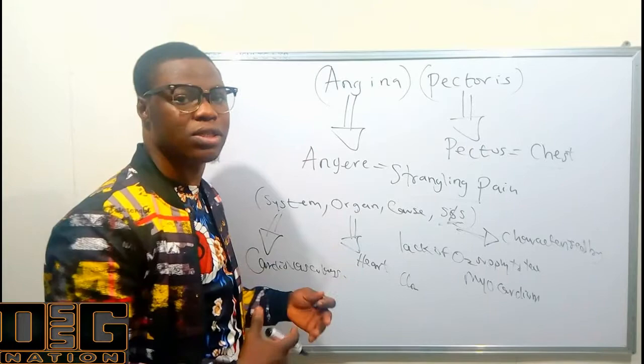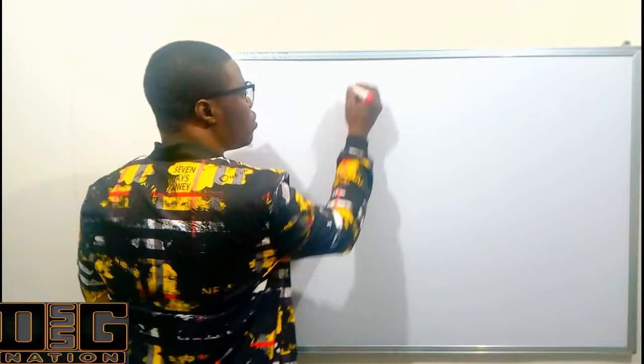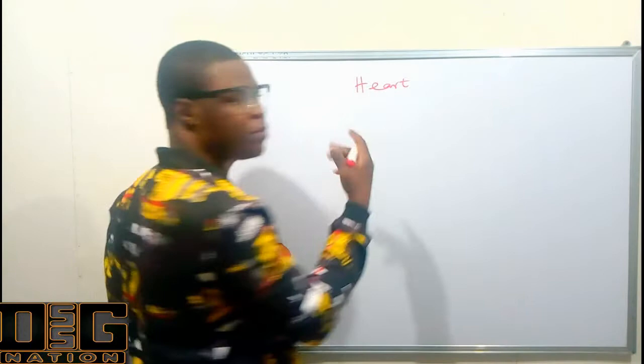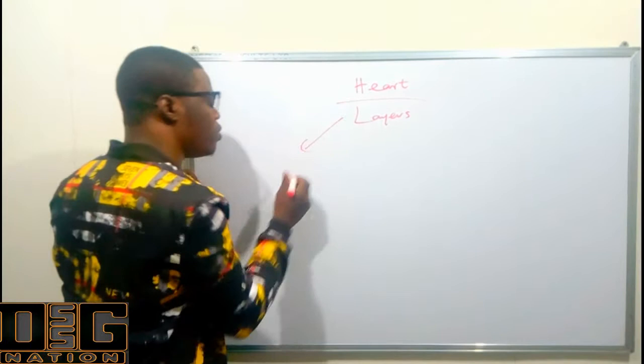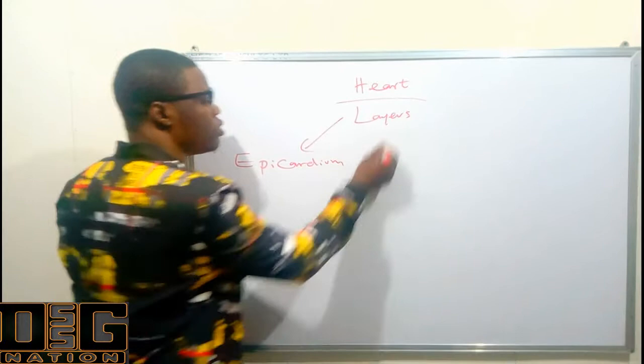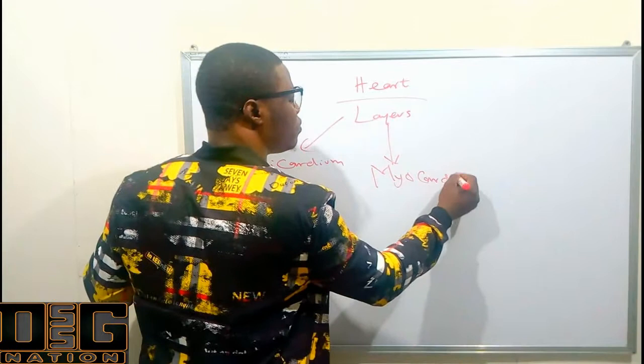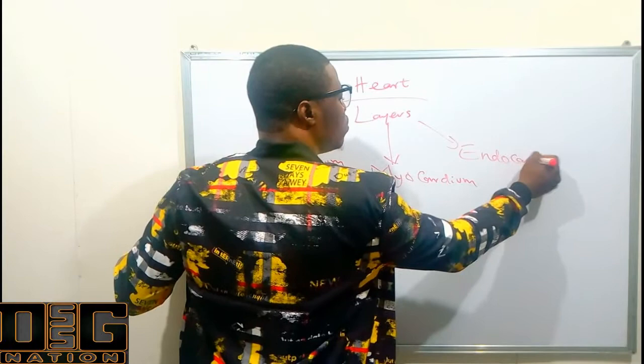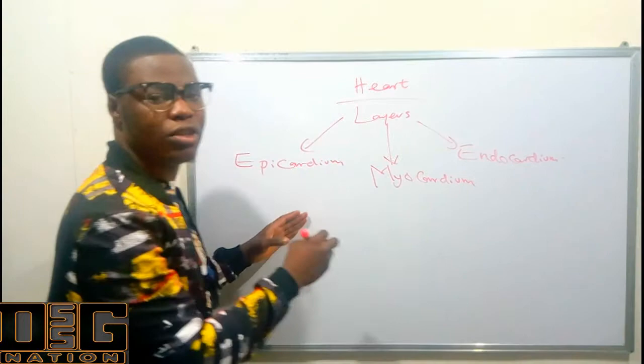Before we proceed to pathophysiology, let's talk about the layers of the heart. The heart has three major layers. The first is the epicardium — 'epi' means outer, 'card' denotes the heart, and the '-ium' ending tells us it belongs to the epithelium family. The second is the myocardium, the middle layer. The third is the endocardium — 'endo' means inner, so it is the innermost layer of the heart.